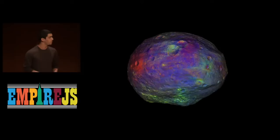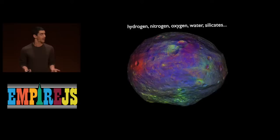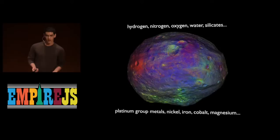Asteroids are not just big existential threats. They're the remnants of a primordial solar system that formed over 4 billion years ago. So they contain basic elements like hydrogen, nitrogen, oxygen. You have water, silicates, and then also things like platinum group metals, cobalt, nickel, iron, magnesium.